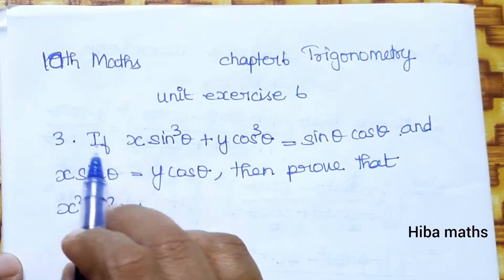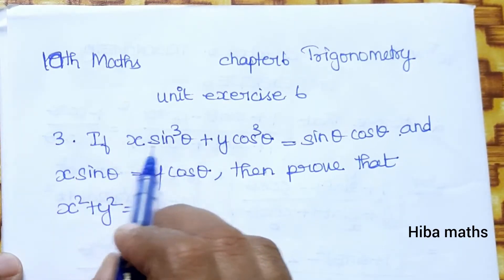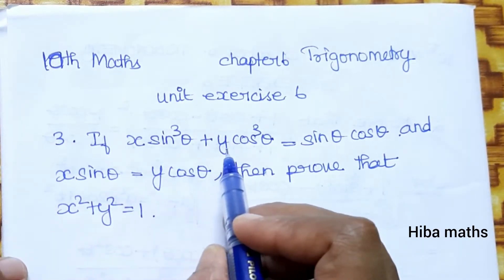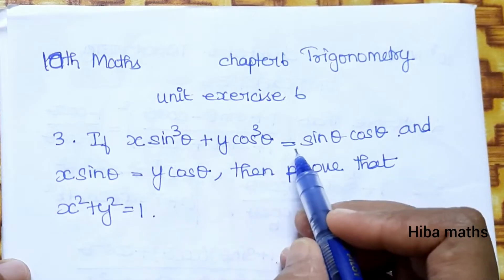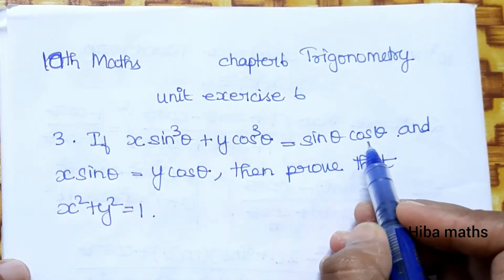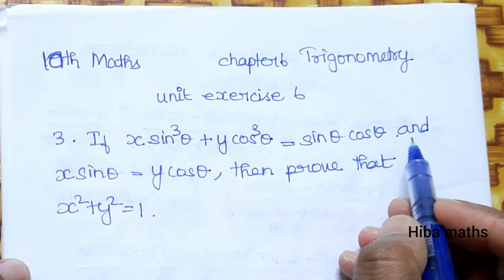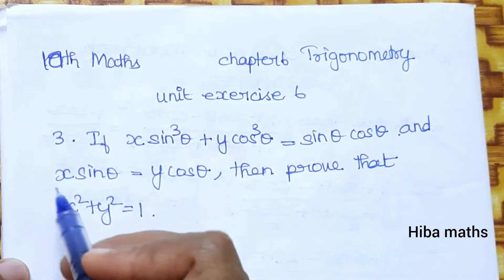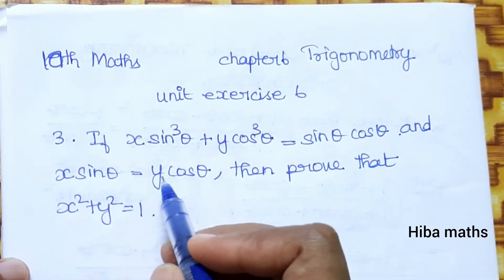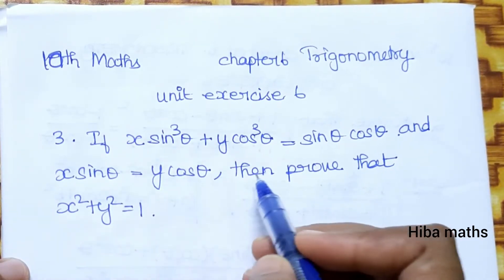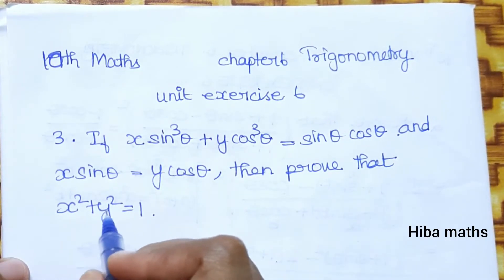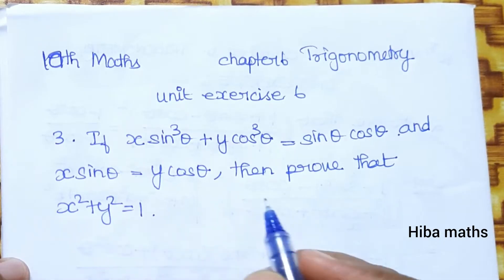Third question: if x sin³θ + y cos³θ is equal to sinθ · cosθ, and x sinθ is equal to y cosθ, then prove that x² + y² = 1.